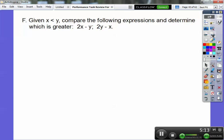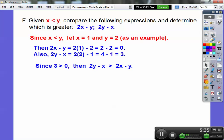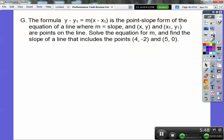Given x is less than y, compare these expressions: 2x minus y or 2y minus x. This is vague, so I'm going to assign numbers. Let x equal 1 and y equal 2. Then 2x minus y becomes 0, and 2y minus x becomes 3. Since 3 is bigger than 0, 2y minus x is greater than 2x minus y.